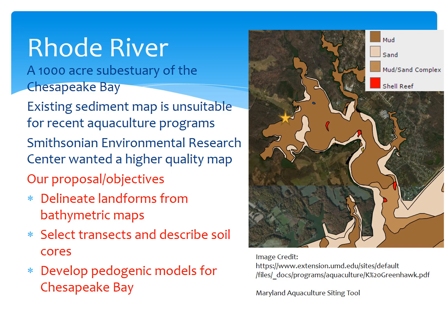It's about 1,000 acres in area, and we've conducted a subaqueous soil survey there. There is an existing sediment map, which you see here, but it's not really suitable for recent aquaculture programs in the state. It divides materials into only four types: mud, sand, a mud-sand complex, and shell reef, and doesn't provide much more information than that. The aquaculture program allows people to lease areas of Bay Bottom, to put down shell and baby oysters — clutch and spat — and to have the exclusive right to harvest from that area. So it's important to know what the soil characteristics are there to understand what sorts of management you'll have to use.